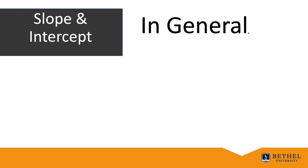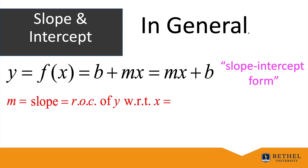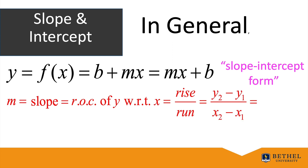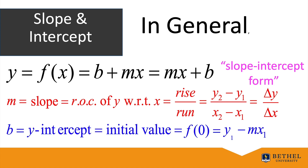In general, a linear function is written as y = f(x) = b + mx, or equivalently mx + b — this is the slope-intercept form. The letter m represents the slope, also the rate of change of y with respect to x, often written as rise/run. For two points (x₁, y₁) and (x₂, y₂), rise = y₂ − y₁ and run = x₂ − x₁, written as Δy/Δx. The value b is the y-intercept — where the graph crosses the y-axis — and the initial value of y (when x = 0), equal to y₁ − m·x₁.